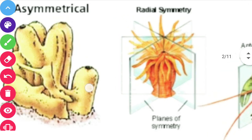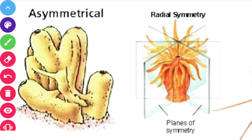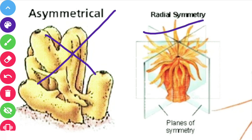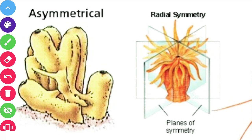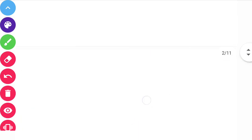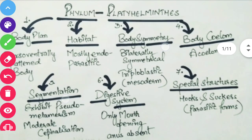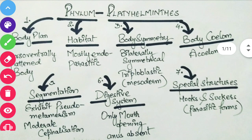Asymmetrical animals are those which we cannot divide from any plane to get equal halves — they show no kind of symmetry, neither radial nor bilateral. Just because of the absence of any symmetry in their body, they are known as asymmetrical animals.